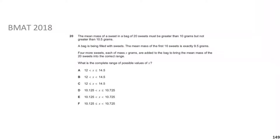This is BMAT 2018 question 20. It says: the mean mass of a sweet in a bag of 20 sweets must be greater than 10 grams but not greater than 10.5 grams. A bag is being filled with sweets; the mean mass of the first 16 sweets is exactly 9.5 grams. Four more sweets, each of x grams, are added to bring the mean mass of the 20 sweets into the correct range. What is the complete range of possible values of x? Pause the video, give yourself a minute, and we'll go through the solution.